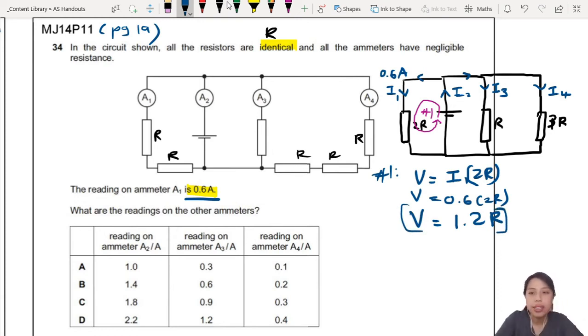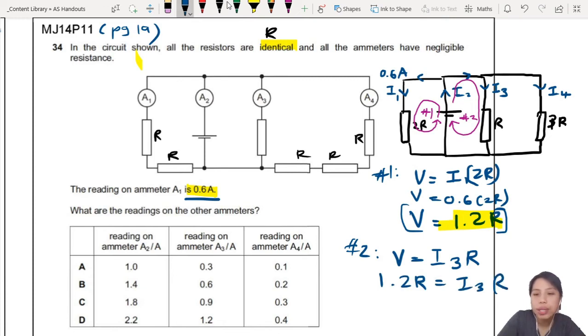Loop number two. Now we know that the PD is 1.2R. Let's choose another loop, let's use this loop, loop number two. Loop number two, you're going up the battery, only one battery, then you drop I3 times R. But very conveniently, you already know the battery PD at first is already 1.2R, so you just write 1.2R. Oh 1.2R, the R and R can cancel out. You divide both sides by R, so R is gone. So then I3 is just 1.2 amperes.